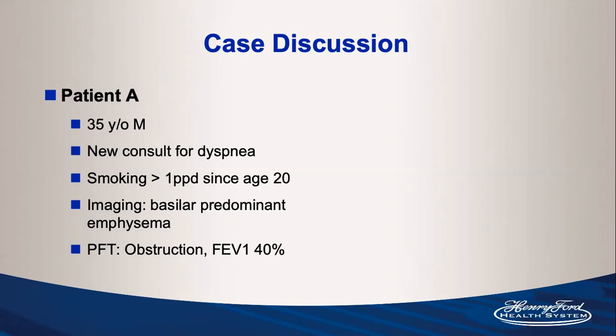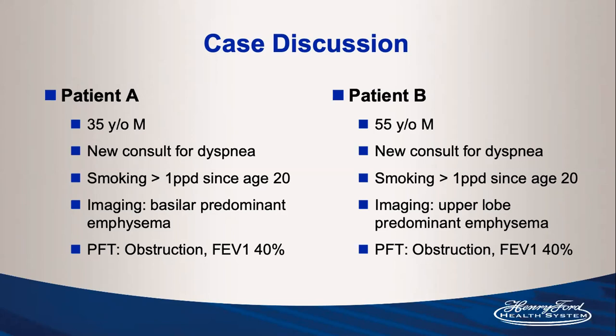Patient B is more typical of a COPD patient — someone in their mid-50s with a new consult for dyspnea, greater than 30 pack-year smoking history, upper lobe predominant emphysema, and obstruction on PFTs with an FEV1 of 40% predicted. Would alpha-1 antitrypsin even cross your mind for this patient, and if he tested positive, would it change his management plan? Keep these two cases in mind throughout the presentation.